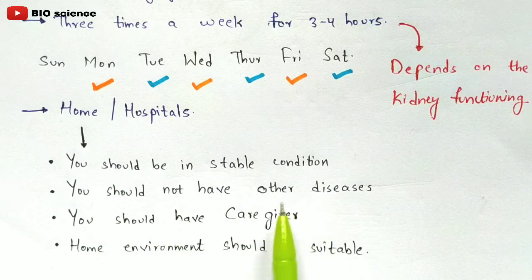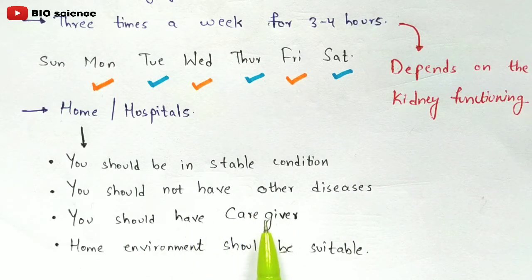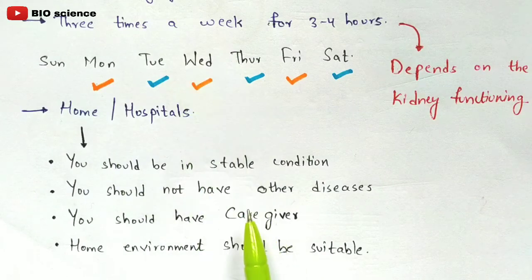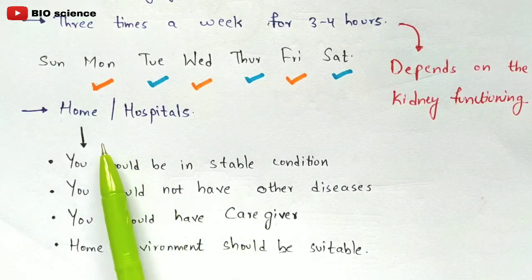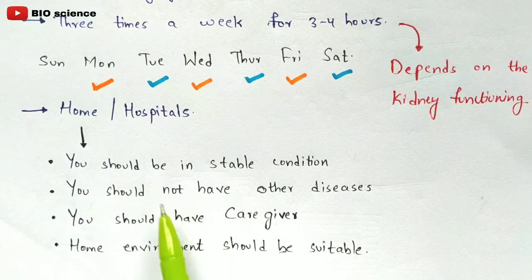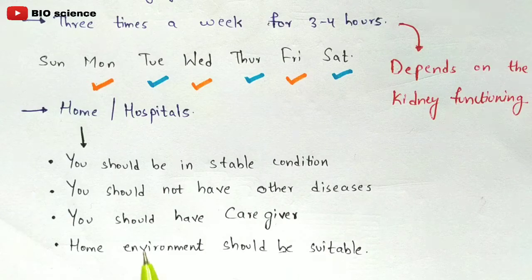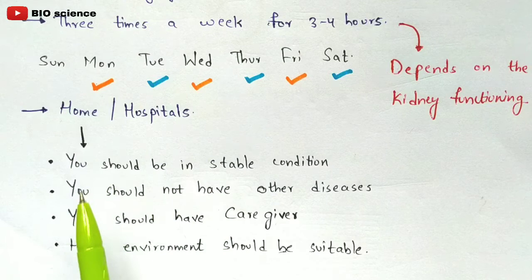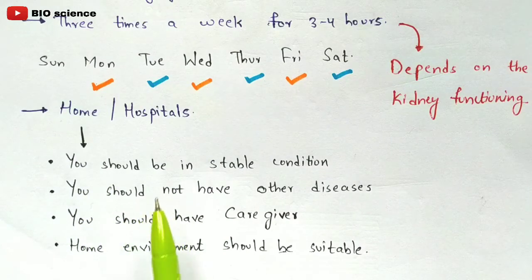For home-based IHD, the patient should have no other diseases and must have a caregiver — such as a nurse, family doctor, or surgeon — since a small surgery is required. The home environment must also be suitable, similar to a hospital environment, so the patient is not disturbed during the process.